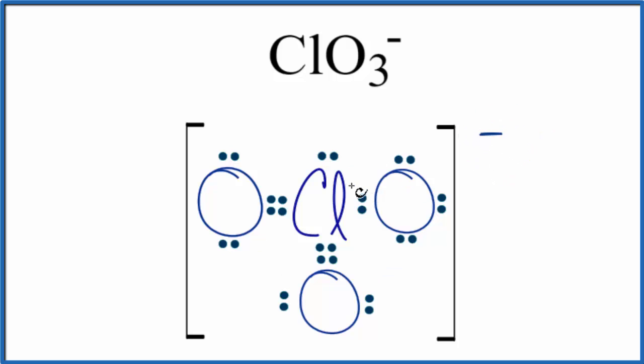Chlorine does have an expanded octet, but that's okay because chlorine can have more than eight valence electrons. There are two other major ways we can draw the Lewis structure for the chlorate ion.